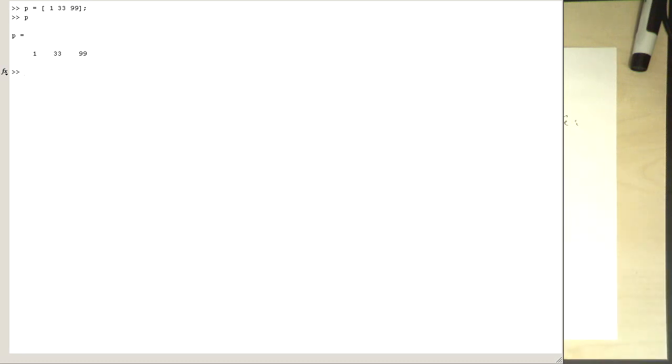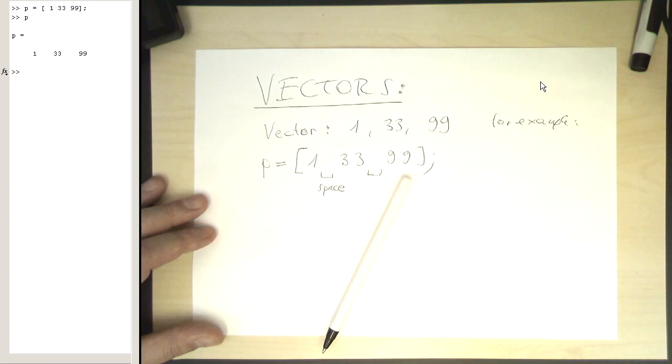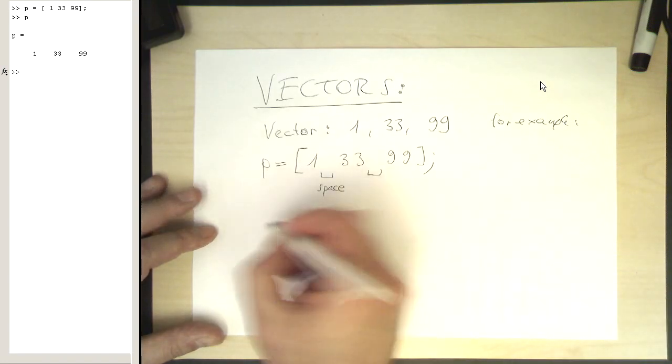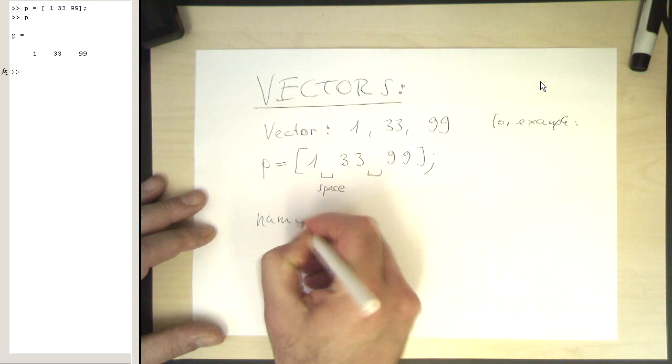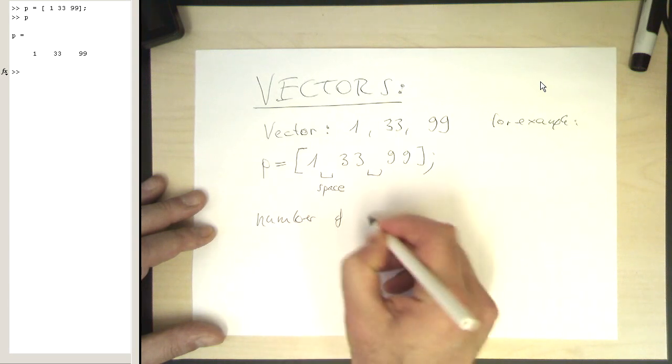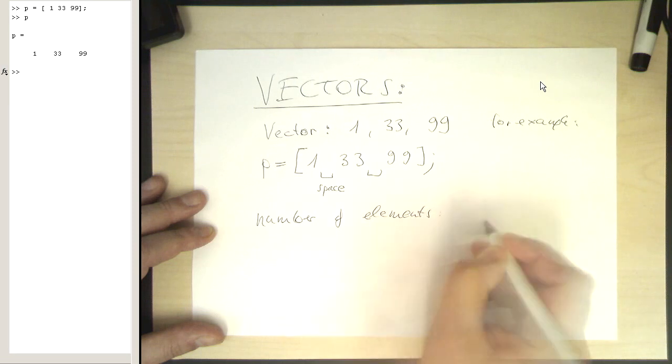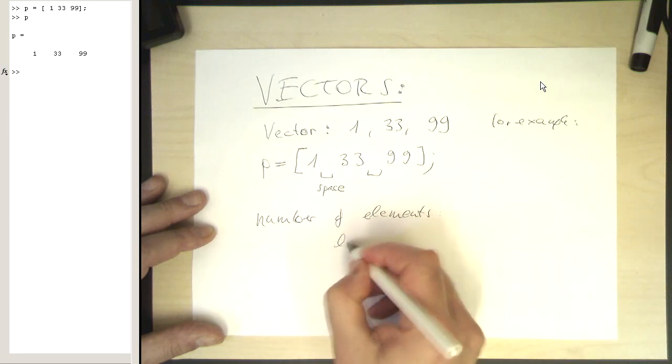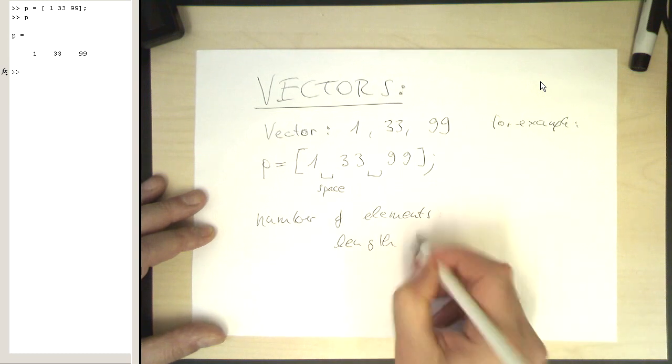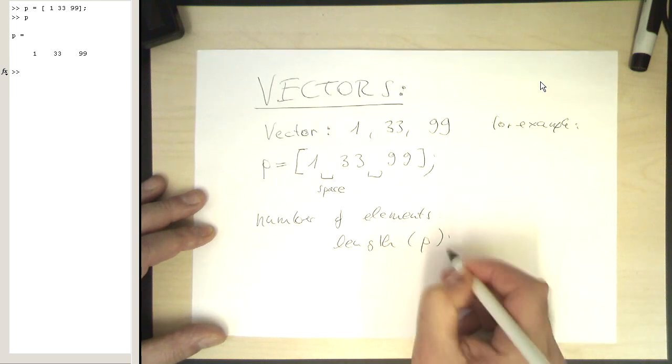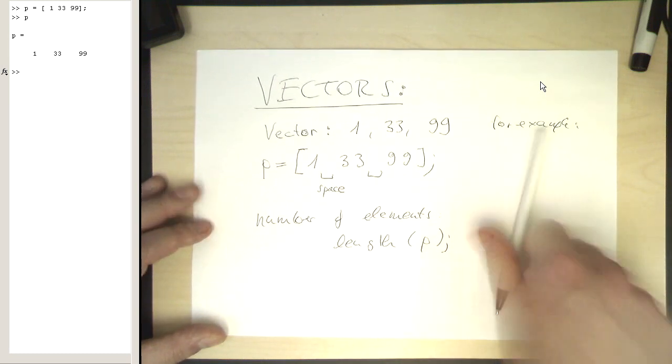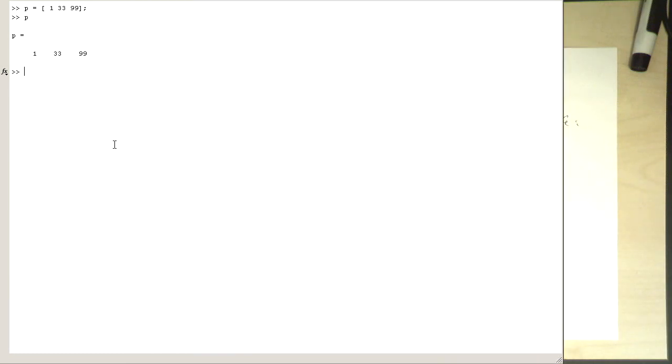So if we want to have the number of elements of the vector, then we just use a function length of P. So let's try this out here. In this case, length of P gives us three elements.